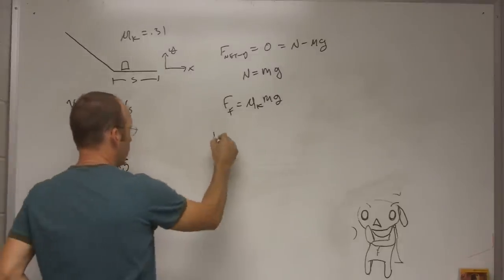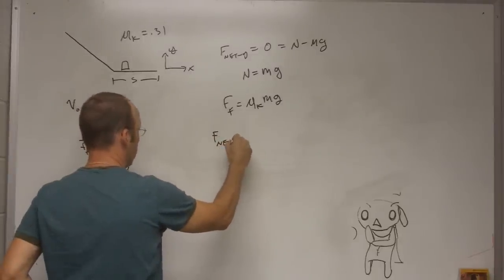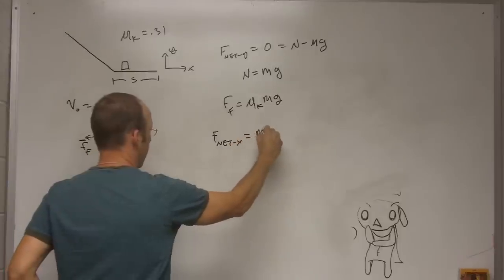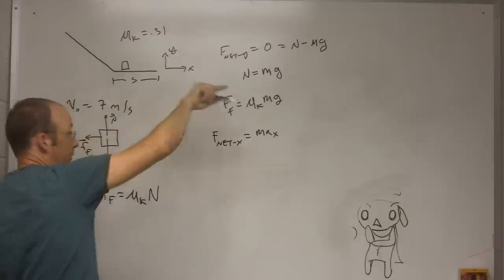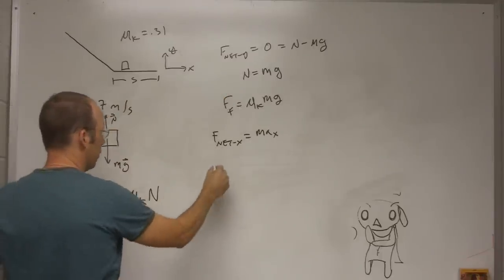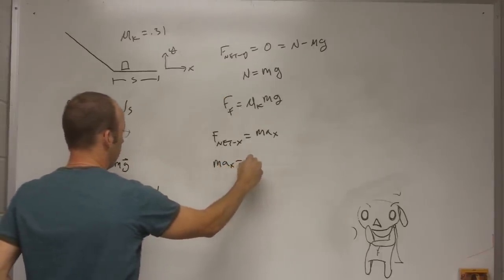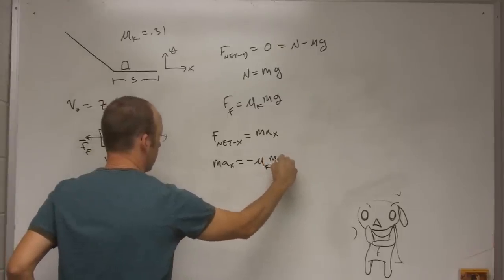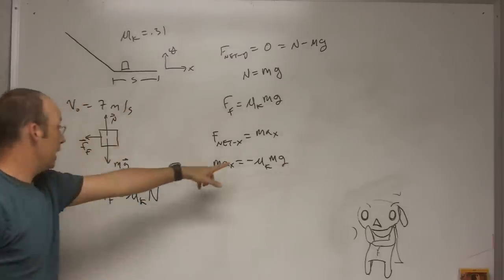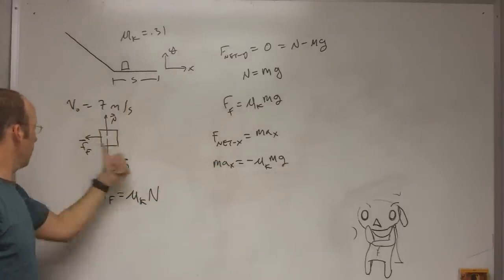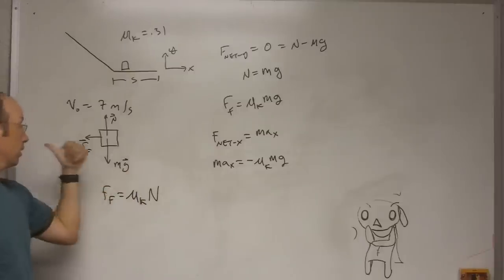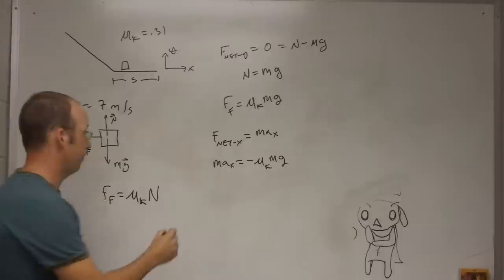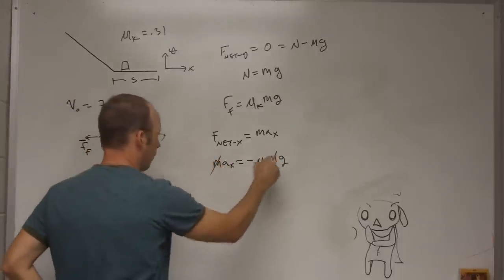And then in the x direction, fnet x equals max, calling that my positive x direction. So it's going to be max equals negative μk mg. And the negative sign here, if you look, that's my positive x direction. So that's pointing in the negative x direction. I need that negative sign there. And the mass is cancelled.